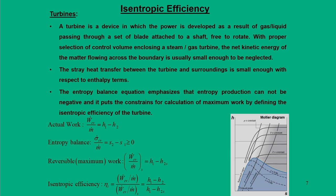On a T-s diagram, the area under the curve when the process undergoes a change of state represents the heat transfer. Similarly, in a P-v diagram for an internal reversible process, the area represents the term V dp. This is the practical significance of work transfer and heat transfer terms for internal reversible processes. These two equations will be heavily used in the analysis of steady flow components. Now let us start with the first important component — turbines — which produce power as gas or liquid passes through blades attached to a rotating shaft.